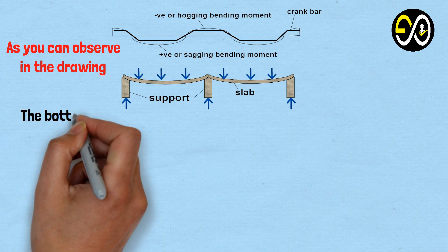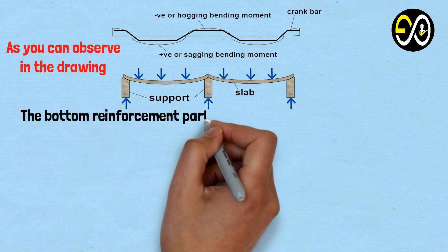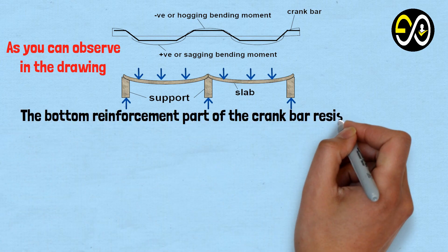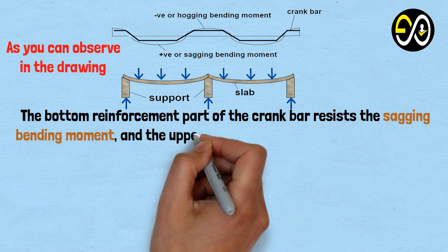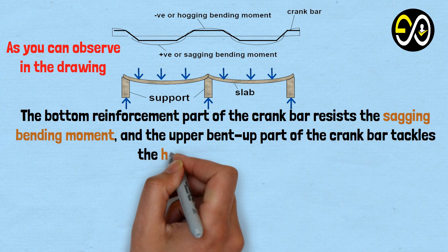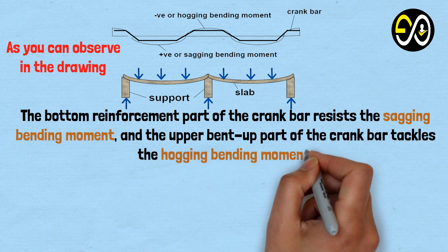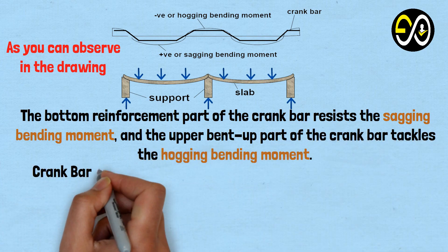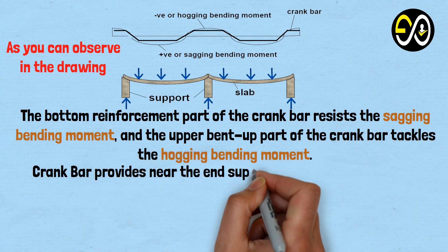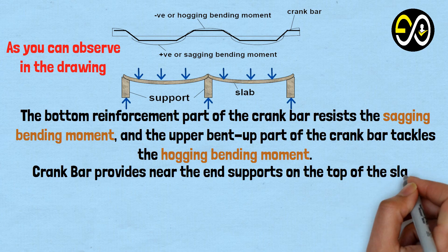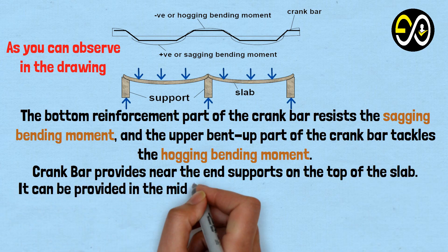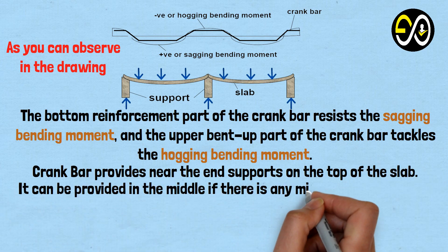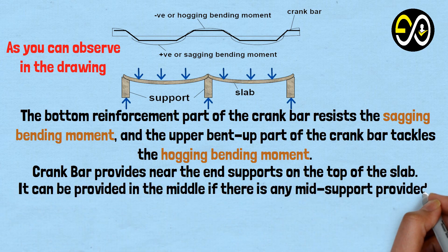The bottom reinforcement part of the crank bar resists the sagging bending moment, and the upper bent-up part of the crank bar tackles the hogging bending moment. Crank bars are provided near the end supports on the top of the slab, and can also be provided in the middle if there is any mid-support provided.